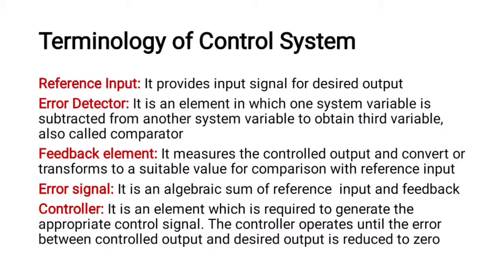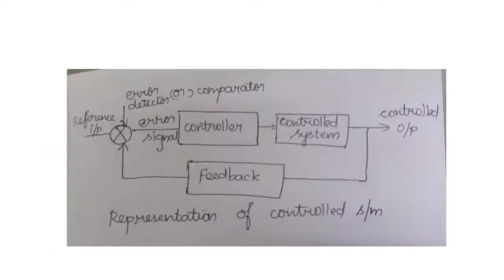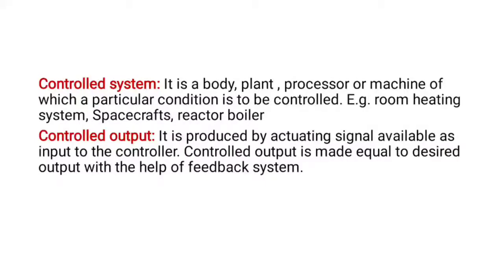Comparing to a C program, the controller acts like a for loop — it keeps running until the condition is met. Similarly, the controller operates until the difference between the desired output and controlled output becomes zero. The controlled system — also called the plant — is the body, plant, processor, or machine whose condition is to be controlled. Examples include a room heating system, spacecraft, and reactor boiler.